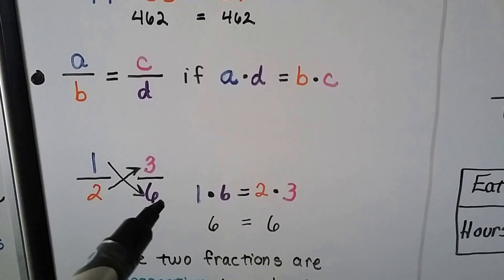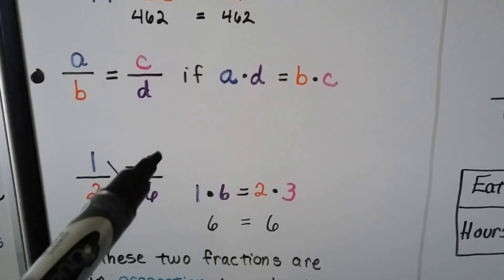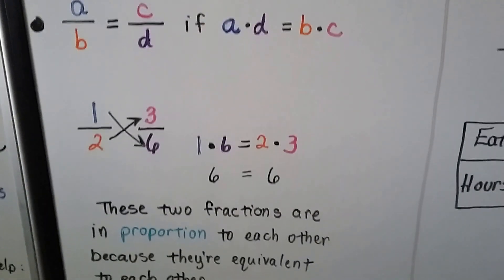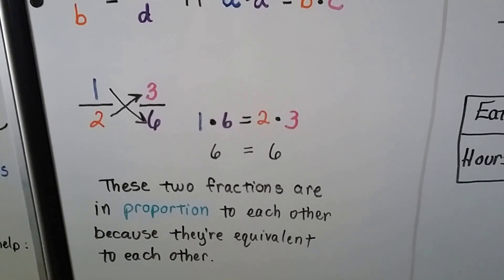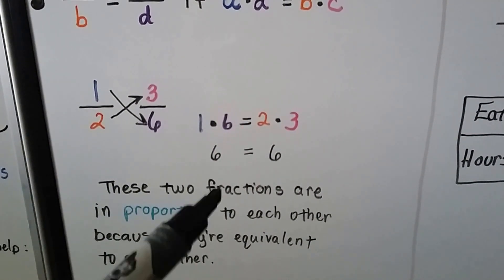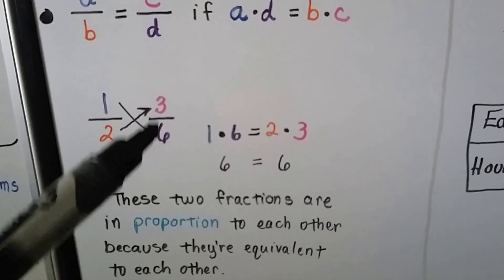If we have 1 times 6, that equals 6, and 2 times 3, that equals 6. So these two fractions are in proportion to each other because they're equivalent to each other. They equal the same thing when we do cross products.